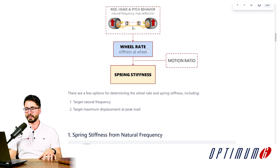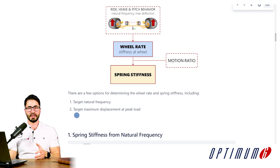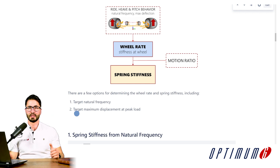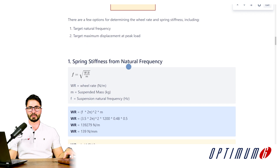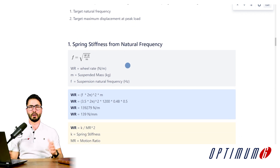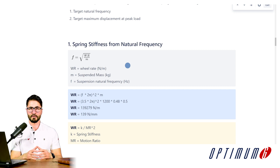There are a few different ways of calculating the wheel rate. We could have a target natural frequency of the suspension — in this case we are disregarding the tires — or we can define a target maximum displacement at peak load. Let's say that we want our suspension to only move 30mm at peak load, and then we can also calculate what wheel rate is needed to achieve that. In our case, we are going to focus on defining a spring stiffness from a given natural frequency.